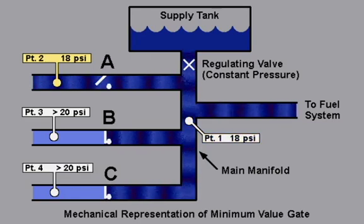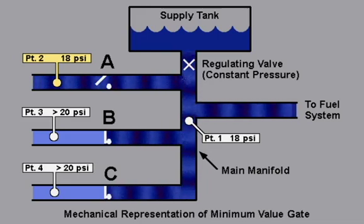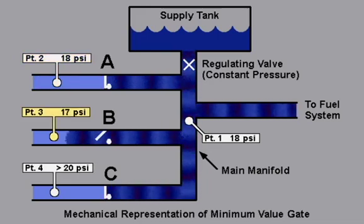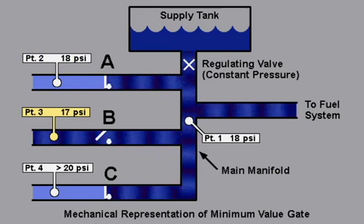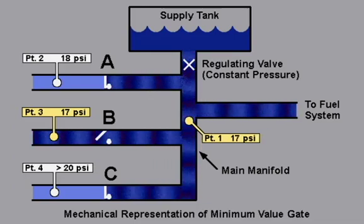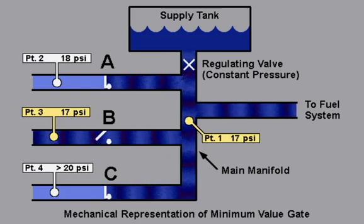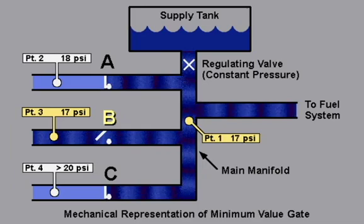As the operating conditions change, the pressure requirements at points 3 and 4 change. As the pressure at point 3 drops below 18 psi, for example 17 psi, the manifold pressure will be brought down to 17 psi, causing check valves A and C to close and check valve B to open. Therefore, system B is now controlling.